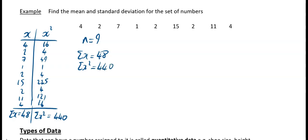And then we can find our mean x bar is equal to sigma x divided by n. So x bar is equal to 48 divided by 9. And if you do that on your calculator, you will get 5.33, and that is to 2 decimal places.